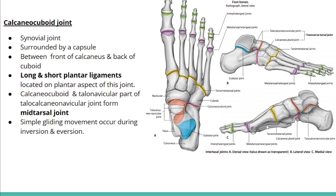The calcaneocuboid joint is also a synovial joint surrounded by a capsule. It is between the front of the calcaneus and the back of the cuboid bone, with long and short plantar ligaments on its plantar aspect. The calcaneocuboid joint and the talonavicular part of the talocalcaneonavicular joint together form the mid-tarsal joint, where simple gliding movements occur during inversion and eversion.